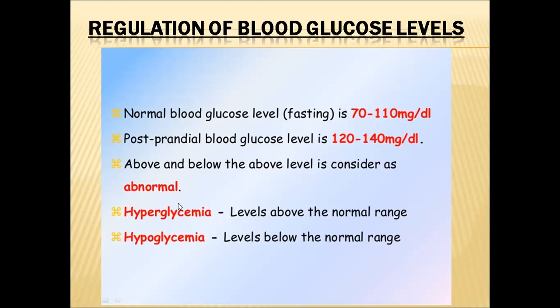These abnormalities have specific terminology. When blood glucose levels are above the normal range, that condition is called hyperglycemia, also known as sugar disease or diabetes mellitus if it continues for a long period of time. When blood glucose levels are below the normal range, that is called hypoglycemia. Both conditions, if they stay for a long period of time, will cause a lot of trouble, so the normal range must be maintained.